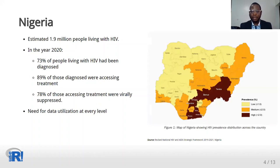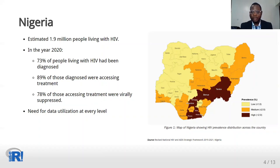Nigeria has the fourth largest epidemic in the world, with an estimated 1.5 million people living with HIV. At the end of 2020, the progress across the 95-95-95 targets was 73%, 89%, and 78%, with varying prevalence and progress across the states as shown by the map. To achieve the UNAIDS target, granular data at community, local government, and subpopulation levels must continuously be made available and utilized for informed decision-making.